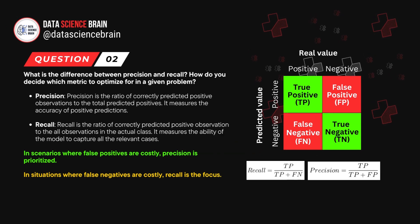Question number two. What is the difference between precision and recall? How do you decide which metric to optimize for a given problem?